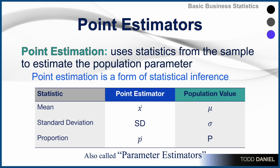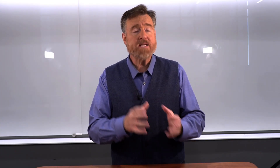For instance, the mean of a sample is X-bar, which is the point estimator for a population value of mu. The standard deviation of a sample is Sd, or sometimes written simply as S, but that is a point estimator for the population value standard deviation called sigma. The proportion of a sample, P-bar, is a point estimator for the population value capital P. And sometimes point estimators are called parameter estimators.